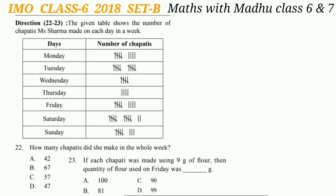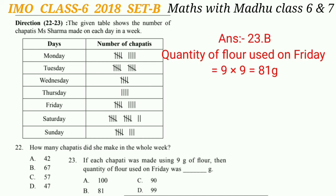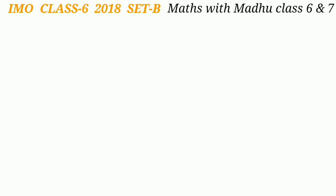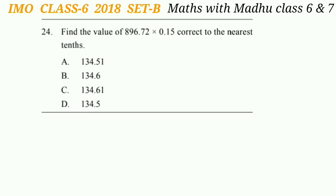Question 23: If each chapati was made using 9 grams of flour, what quantity of flour was used on Friday? The number of chapatis made on Friday is 9, so the quantity of flour used is 9 × 9 = 81 grams. The answer is option B.